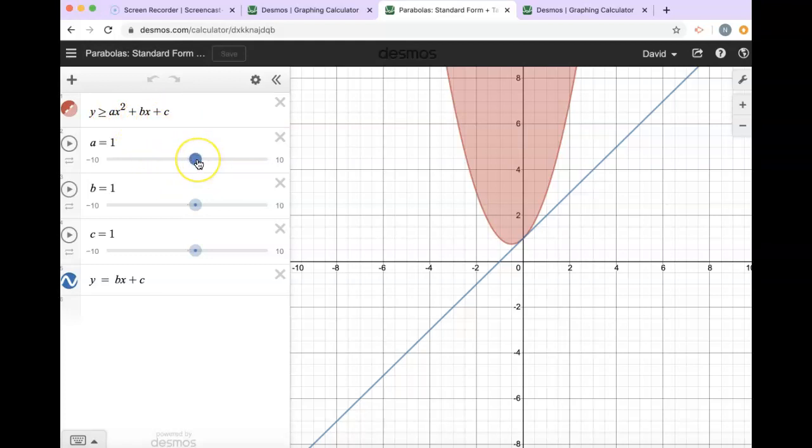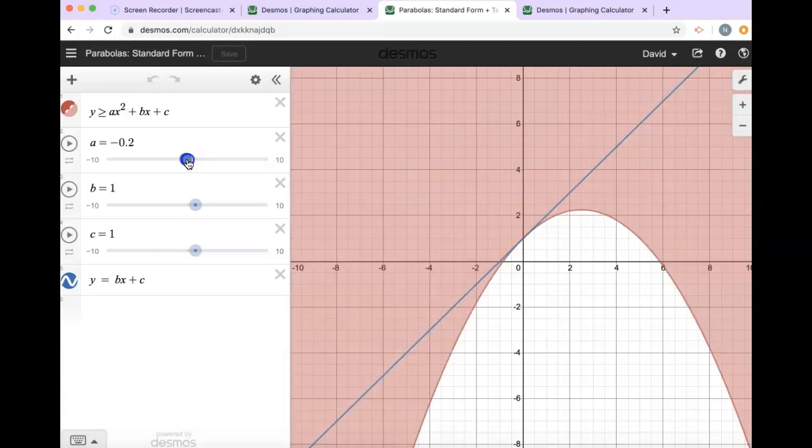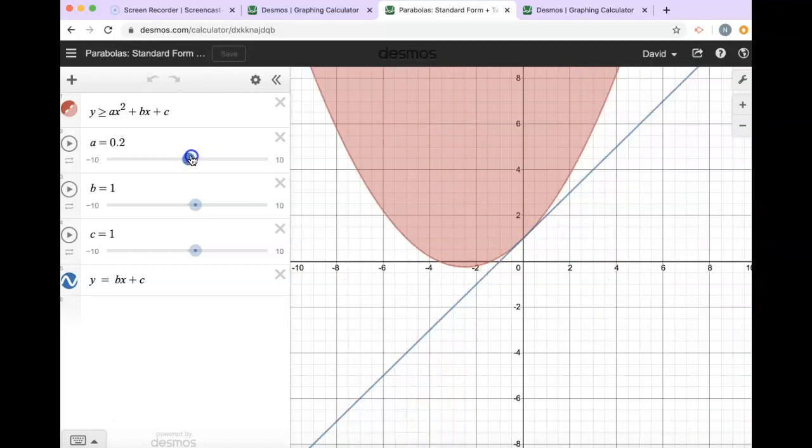We know that if we make our a value bigger, our graph gets thinner, and as we go between zero and one we get wider, and if we go in the negatives we flip over.